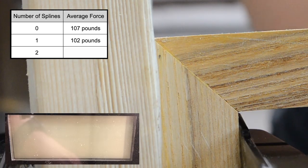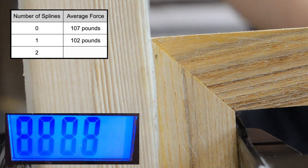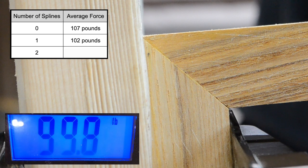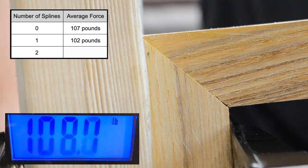Anyway moving on, next I tested the joints with dual splines, and these took 118 pounds and 129 pounds to break, averaging at 124 pounds.